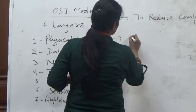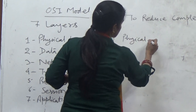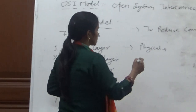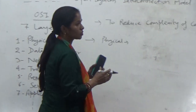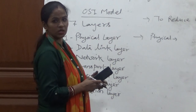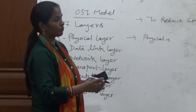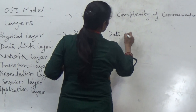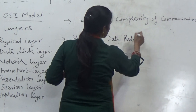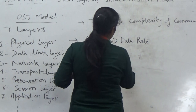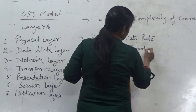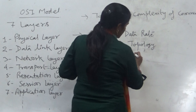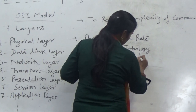The physical layer is the first layer. Its functions include how we are going to construct or reconstruct data — that is, how bits are transmitted from the transmission media. It deals with the data link, what the topology will be, and whether the communication is point-to-point or multi-point.